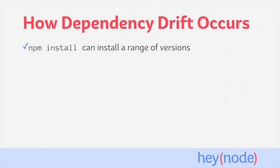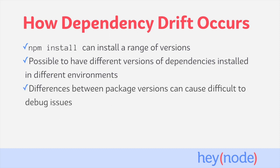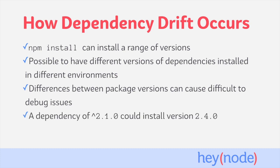Because npm install can install a range of versions based on the rule symbols on our version numbers, it's possible to have slightly different versions of dependencies installed each time you run a fresh npm install. This can lead to difficult to debug issues in your application. Across various developers working on your project or environments where your application runs, different versions of dependencies could be in use. For example, if a dependency version is listed in your package.json as caret 2.1.0, and by the time you deploy the application version 2.4.0 is available, npm install will fetch version 2.4.0, which could possibly cause issues.